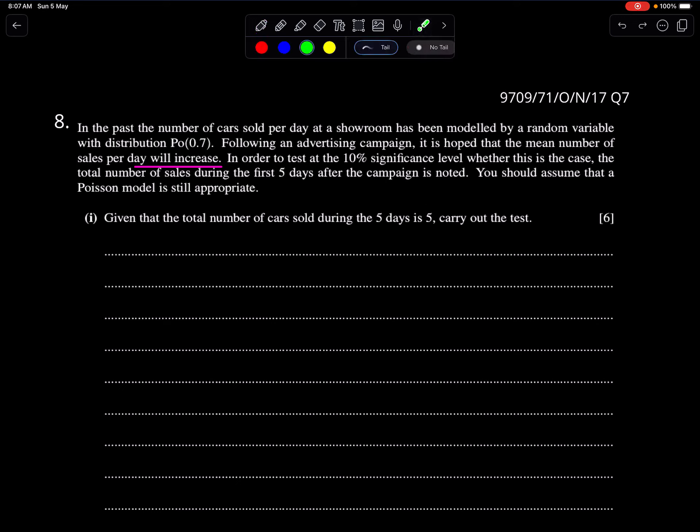In the past, the number of cars sold per day at a showroom has been modeled by a random variable with Poisson distribution with lambda 0.7. Following an advertising campaign, it is hoped that the mean number of sales per day will increase. Now this is the claim. So here lambda is 0.7, and it says that lambda will increase.